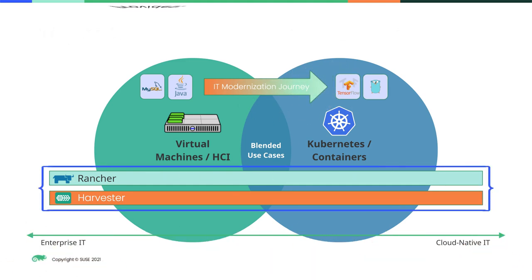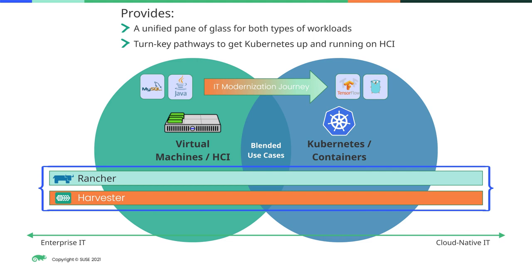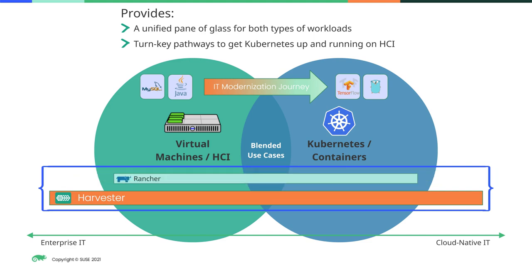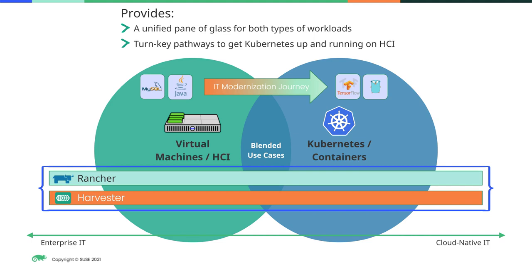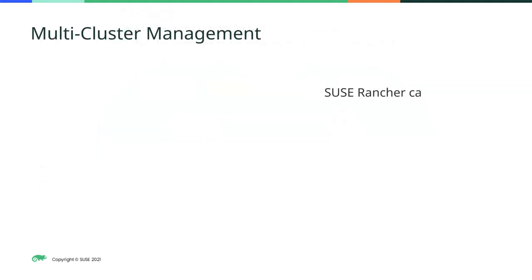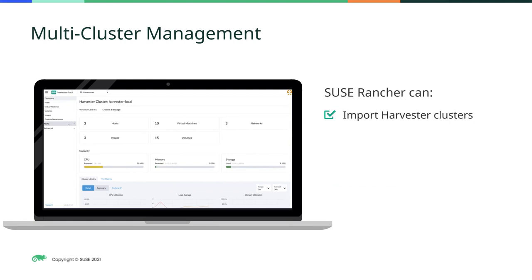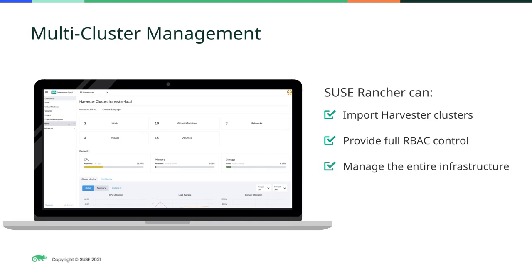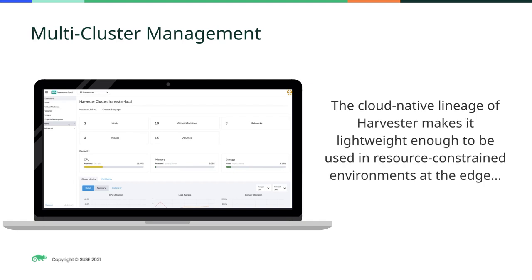The deep integration of SUSE Rancher and Harvester provides a unified pane of glass for both types of workloads. It also provides turnkey pathways to get Kubernetes up and running on HCI. With SUSE Rancher working with Harvester, it's now easier to orchestrate Kubernetes faster than ever before. In addition, SUSE Rancher can import Harvester clusters and utilize the SUSE Rancher authentication system for full RBAC control. The GitOps and cloud-native tooling in SUSE Rancher can now manage the entirety of the infrastructure, driving policy and pushing consistent updates across hundreds or thousands of HCI and Kubernetes clusters. Harvester's cloud-native lineage also makes it lightweight enough to be used across resource-constrained environments at the edge.